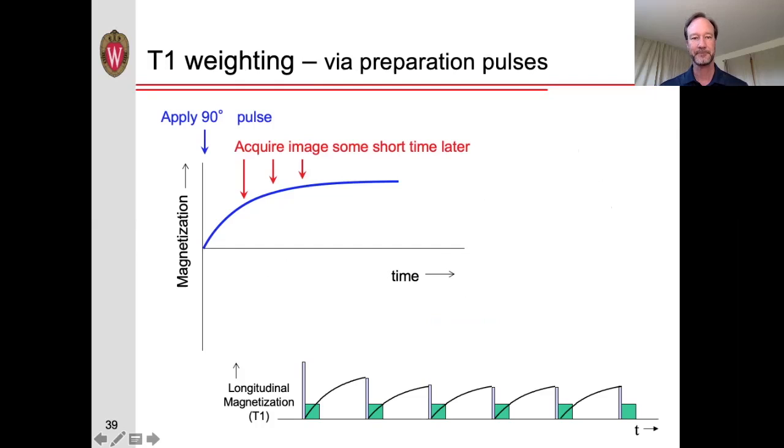So for example, in this case, this is what we call saturation recovery. We could use this for some T1 weighting. That is, if we apply a 90-degree pulse, wait a certain period of time, and then remove the remaining transverse magnetization, and then acquire our data, what happens is that the signals will not have fully recovered, depending on where they'll recover, depending on the T1s.